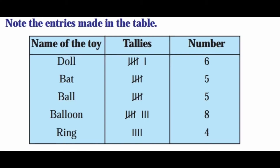Note the entries made in the table. Dolls is 6 - one bundle of 5 plus 1. Bat is 5 - that's 5 tally marks in one group. Balls is 5. Balloons is 8 - that's 5 plus 3. Rings is 4. Now let's make a tally and represent this pictorially.